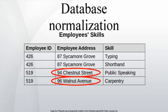The same information can be expressed on multiple rows, therefore updates to the table may result in logical inconsistencies. For example, each record in an employee skills table might contain an employee ID, employee address, and skill. A change of address for a particular employee will potentially need to be applied to multiple records, one for each skill. If the update is not carried through successfully — the employee's address is updated on some records but not others — the table is left in an inconsistent state, providing conflicting answers. This phenomenon is known as an update anomaly.